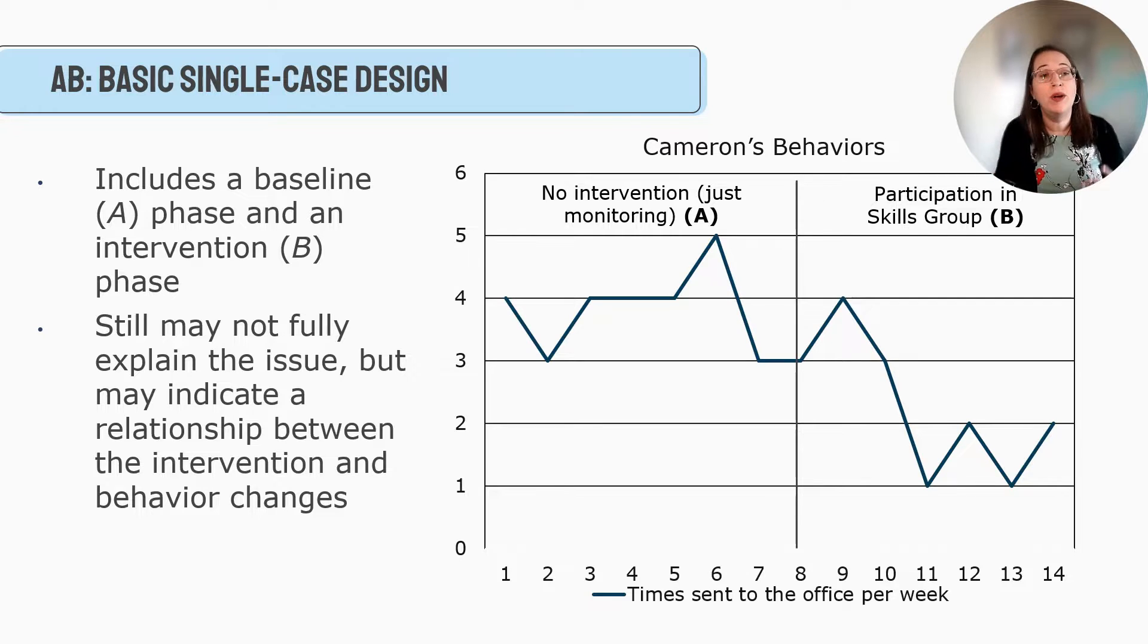There could be other things at play here, but it can at least indicate a relationship between the intervention and behavior changes. Now, one of the limits of an AB design is there could be an external thing that happens. Let's say in week eight, Cameron makes a really good friend. His friend also struggles a little bit socially, but they're buddies. They eat lunch together and may not even be participation in the skills group. It could be just having someone to eat lunch with, and that makes all the difference at that age. So maybe it's not an intervention, but something extraneous. It's hard to argue causal inference because we don't know. It could be something else.